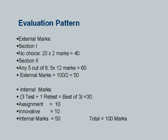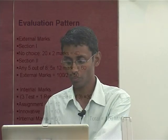Internal marks are calculated based on: assignments, innovative work, and three weekly tests plus one retest — we take the best of three tests. The test component carries 30 marks, assignments carry 10 marks, and innovation carries 10 marks, so internal marks total 50. Adding internal and external gives the final total.